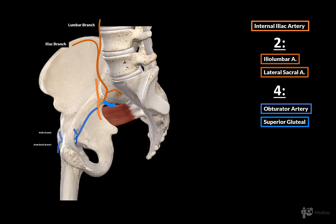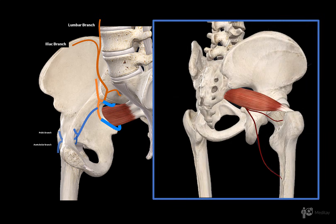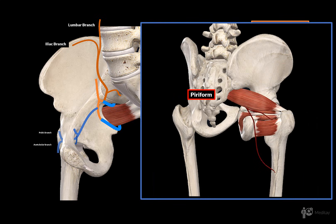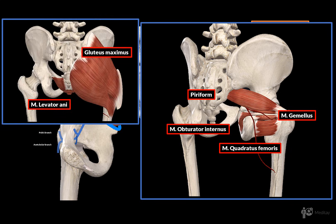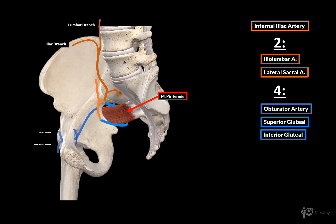Since we have a superior gluteal artery, we also have the inferior gluteal artery. It leaves the pelvic cavity through the space below the piriformis muscle, and then goes towards the lower part of the hip joint to supply the internal obturator muscle, gemellus, quadratus femoris, gluteus maximus, and the levator ani muscle.